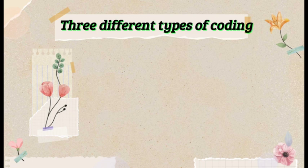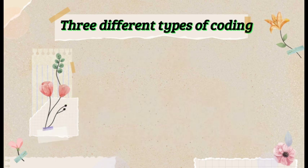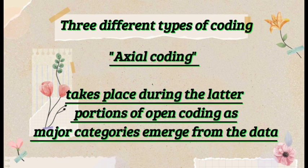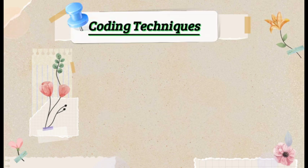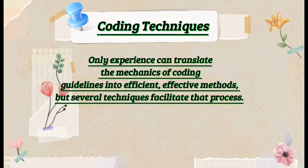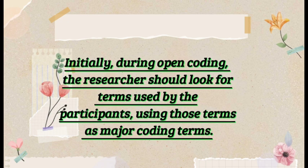Coding lies at the heart of the constant comparative method, as units of data are compared to each other in terms of their fit into the developing coding scheme. Three different types of coding: open coding is the initial provisional work done on an unrestricted basis to produce concepts that fit the data; axial coding takes place during the latter portions of open coding as major categories emerge; selective coding takes place as soon as open and axial coding have begun to establish core categories. During open coding, researchers should look for terms used by the participants and use those as major coding terms.